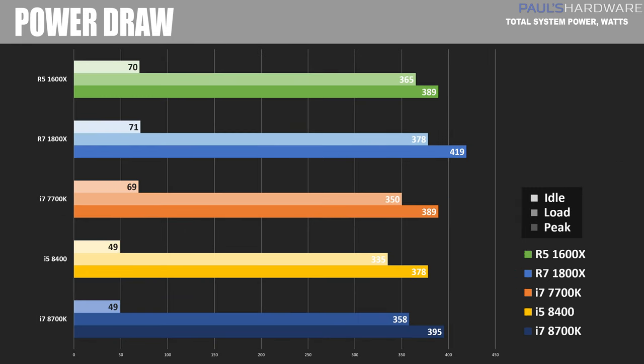Here is the power draw data. As previously mentioned, the Coffee Lake CPUs idle very nicely — only about 49 watts drawn compared to 70 or so from the Ryzen platforms. On average, we saw good power draw from the Coffee Lake CPUs, about 358 watts and 335 watts on average from the 8700K and 8400 respectively, a little bit less than we were drawing from the 1800X and 1600X. It's nice to know these are keeping up performance-wise with the Zen CPUs, which are known to be very power efficient.